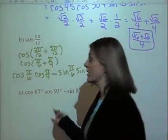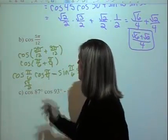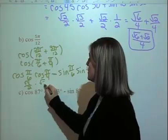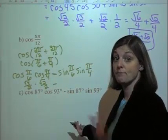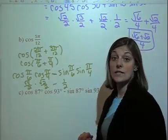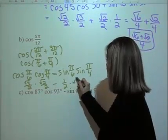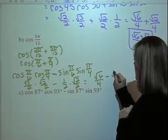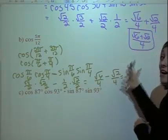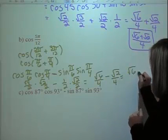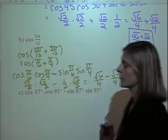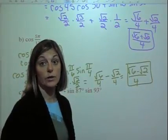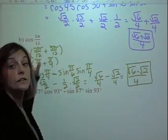Cosine of π/6 is √3/2, cosine of π/4 is √2/2, sine of π/6 is 1/2, and sine of π/4 is √2/2. Simplifying, we get √6/4 minus √2/4. So the exact answer is (√6 − √2) / 4.